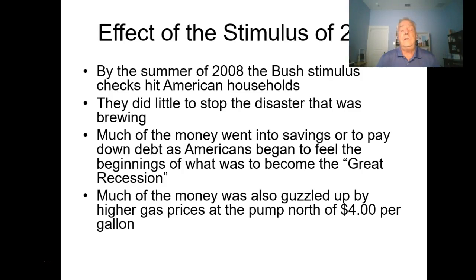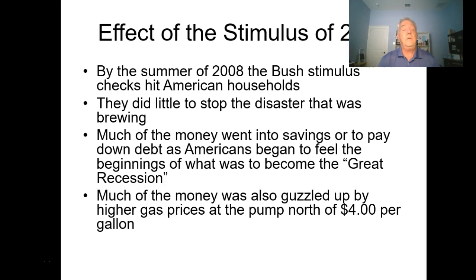At the same time, gas prices hit $4 per gallon in some places—certainly in California. The combination of uncertainty about earning income and asset values, plus the gas price problem, hit us in a key area: we are a very mobile society, and this had a tremendously bad psychological impact on our thinking and psyche.